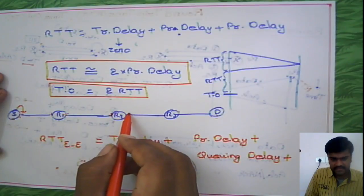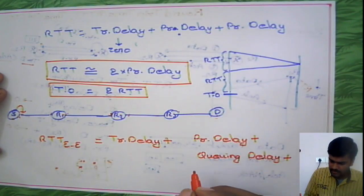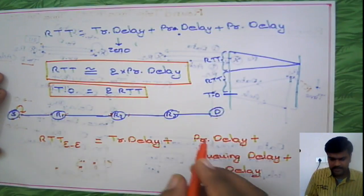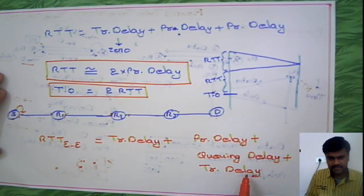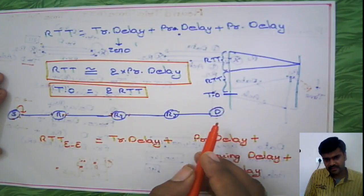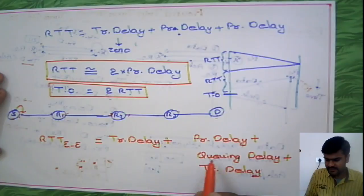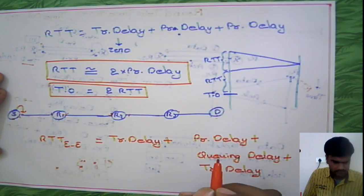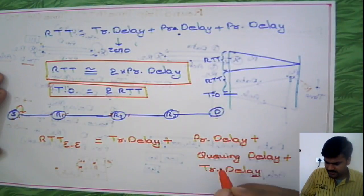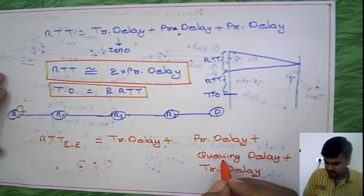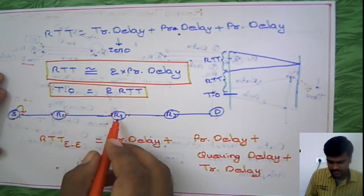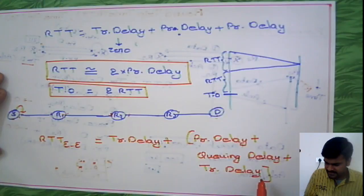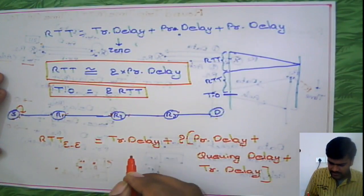When a packet is retransmitted, it needs to be transmitted at each hop. So we also include the transmission delay. These are all the parameters for one direction: propagation delay, queuing delay, and transmission delay. After that, an acknowledgement must be sent back, and the same delays apply in the return direction — so this is done two times.